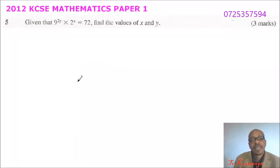This is 2012 KCSE Mathematics Paper 1, number 5. Given that 9 raised to power 2y multiplied by 2 raised to power x equals 72, find the values of x and y. You get yourself 3 marks.